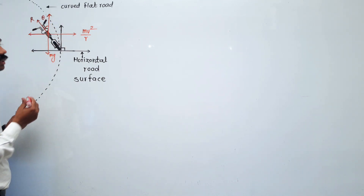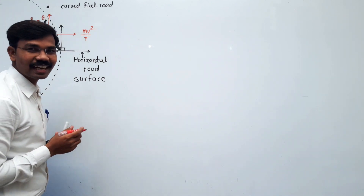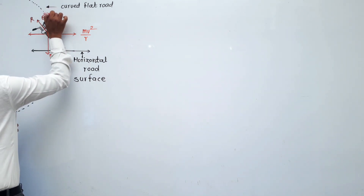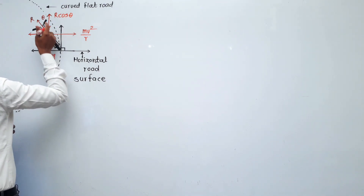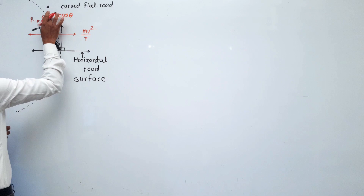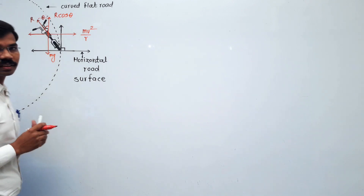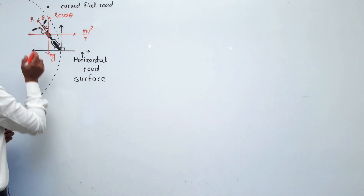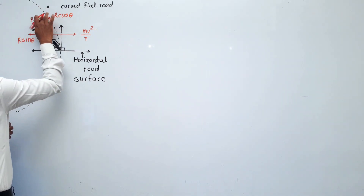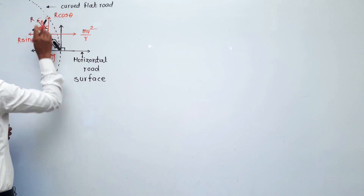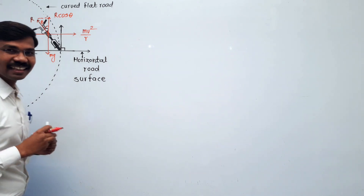If you have this vertical component, theta is the adjacent side, so the vertical component is R cos theta. If you have the horizontal component, theta is the opposite side, so the horizontal component is R sin theta.